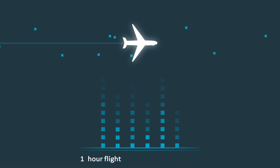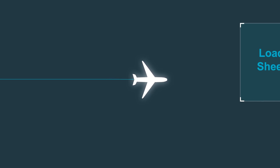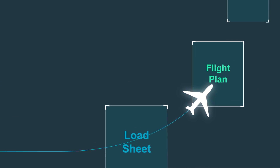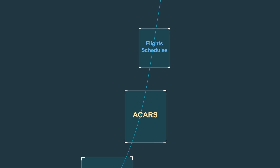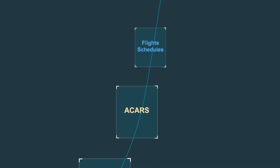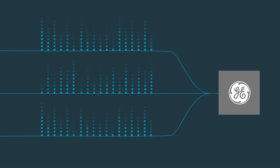Aircraft are generating more data than ever before. During a one-hour flight, an aircraft can generate over two million individual data points. Other data sources also provide valuable information, including load sheets, flight plans, ACARS reports, and historic flight schedules. To make these useful, we just need to compile all this data in a meaningful way for pilots.